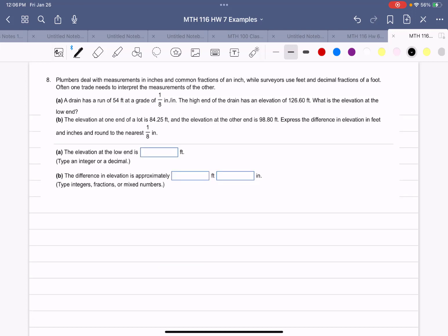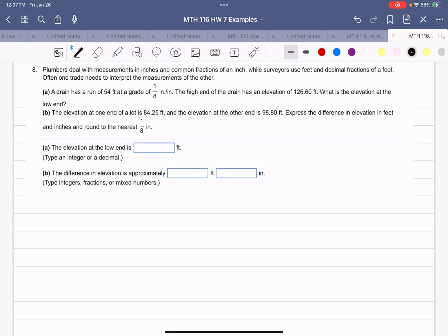Example eight. Plumbers deal with measurements in inches and common fractions of an inch, while surveyors use feet and decimal fractions of a foot. Often, one trade needs to interpret the measurements of the other. So here in part A, we have a drain that has a run of 54 feet at a grade of 1/8 inch per inch.